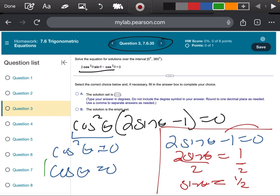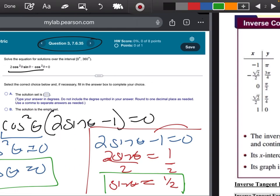What I want to do is think about when is the cosine equal to 0, and when is the sine equal to 1 half.